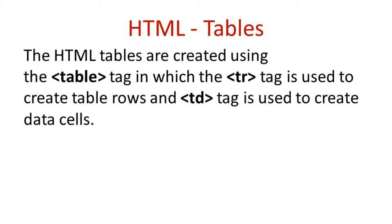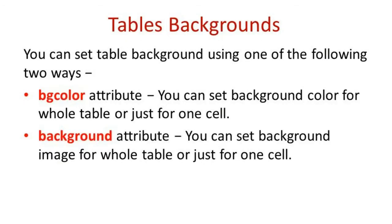Next is the table tag. If we want to create or insert a table inside a web page, the table tag is used. We can create a table with as many rows and columns as required. We can change the background color or properties of the table using attributes. The bgcolor attribute changes the background color of the table or just one cell, and the background attribute sets a background image for the whole table or just one cell.